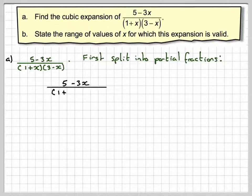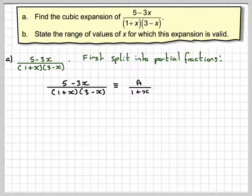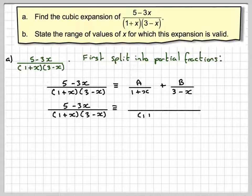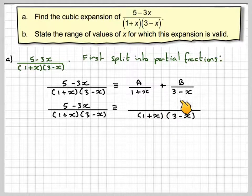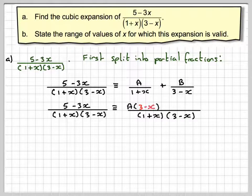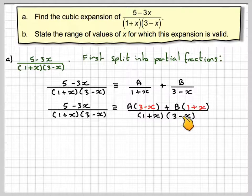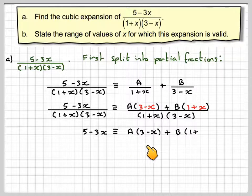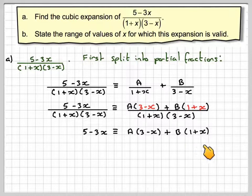So 5 minus 3x over 1 plus x, 3 minus x is equivalent to a over 1 plus x, it's a two linear factor, plus b over 3 minus x. Putting both sides over the same denominator, the denominator would be 1 plus x times 3 minus x. That means that a would have to be multiplied by 3 minus x and b would have to be multiplied by 1 plus x. So we have that 5 minus 3x is equivalent to a times 3 minus x plus b times 1 plus x.